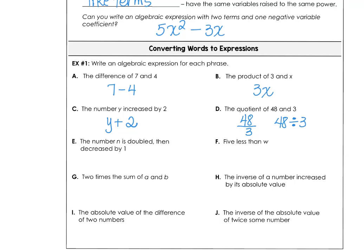We have the number n, we're going to double that, and then decrease by 1. So double the number n, decreased by 1. Now, letter F is a little tricky. 5 less than w doesn't mean 5 minus w. It means w, the number, and we want 5 less than that. So be on the lookout for that type of wording.